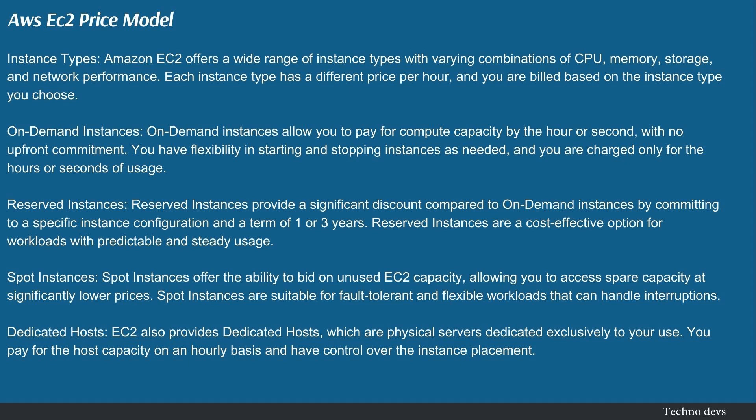Reserved instances provide a significant discount compared to on-demand instances by committing to a specific instance configuration and a term of 1 or 3 years. They are a cost-effective option for workloads with predictable and steady usage. Spot instances offer the ability to bid on unused EC2 capacity, allowing you to access spare capacity at significantly lower prices, and are suitable for fault-tolerant and flexible workloads that can handle interruptions. Dedicated hosts are physical servers dedicated exclusively to your use — you pay for the host capacity on an hourly basis and have control over instance placement.